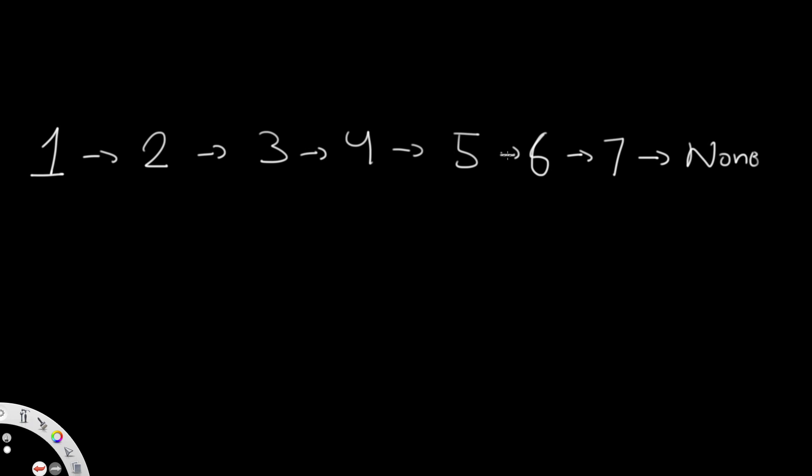We go one, two, three, four, five, six, and once we reach seven, the next value is none. That means the linked list has a definitive stopping point. In this case, we're going to return null for the question.